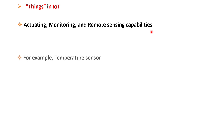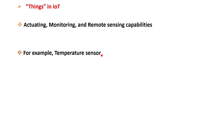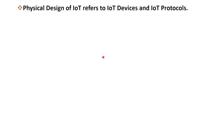For instance, consider a temperature sensor that analyzes temperature levels. This sensor collects data from a specific location and then utilizes algorithms to determine and interpret the temperature readings. The resulting data can be utilized for further analysis and improvement of the system. These devices serve as the fundamental components of IoT applications. Physical design of IoT encompasses IoT devices and IoT protocols.